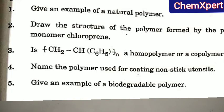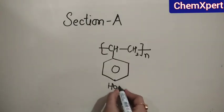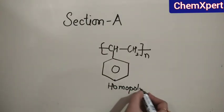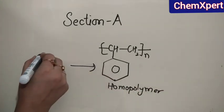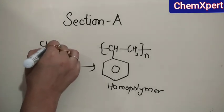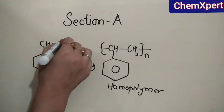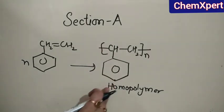The third question is: is CH2CHC6H5 a homopolymer or a copolymer? This is an example of a homopolymer, because it is made up of only one kind of monomer — that is styrene. When styrene is polymerized, we get this structure, so it is a homopolymer.